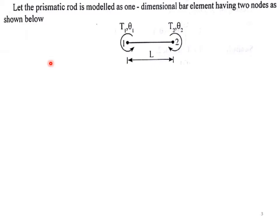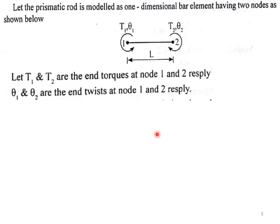It is modeled by a simple 1D element which has two nodes: node 1 and node number 2. T1 is torsion at node number 1, T2 is torsion at node number 2. Theta 1 and theta 2 are the angle of twists at node number 1 and node number 2 respectively. L is the entire length. Let T1 and T2 are the end torques at node 1 and 2 respectively. Theta 1 and theta 2 are the end twists at node 1 and 2 respectively.